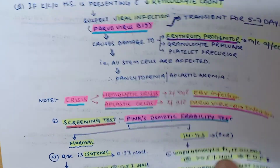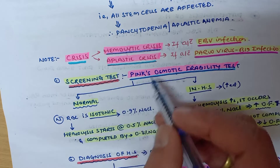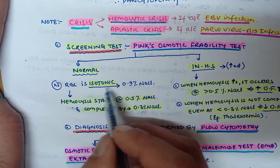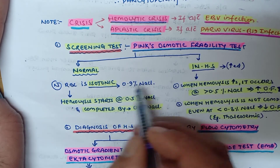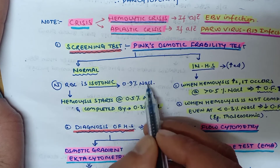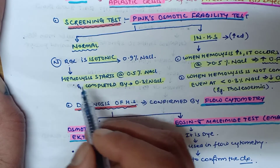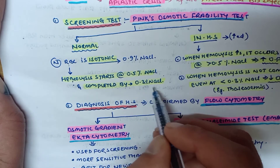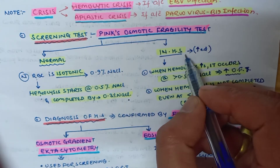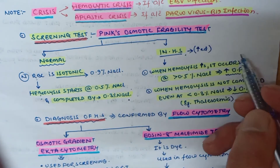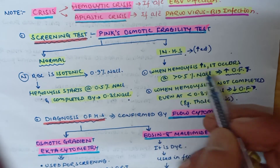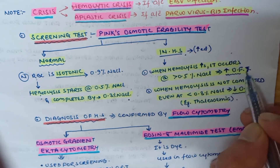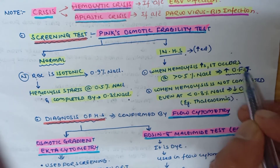The screening test for hereditary spherocytosis is the Pink's osmotic fragility test. Normally, RBC is isotonic to 0.9% NaCl. In normal RBC, hemolysis starts at 0.5% NaCl and is completed by 0.3% NaCl. In hereditary spherocytosis, osmotic fragility is increased — hemolysis occurs at more than 0.5% NaCl.